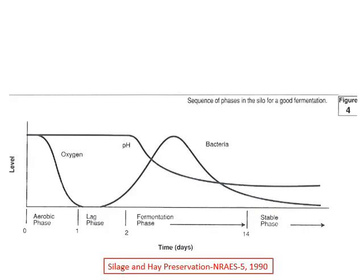We have this chart here. On the x-axis we have the stages that will go through with an approximate timeline. On the y-axis we have a generic scale for the levels of oxygen, pH, and bacteria.